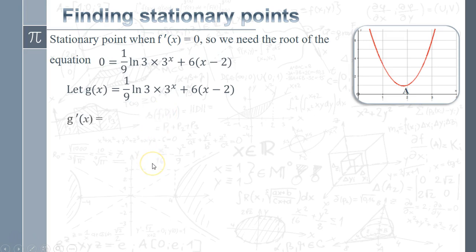To use Newton-Raphson, we're going to need g'(x), which means differentiating this function. Differentiate 3^x becomes ln(3)·3^x multiplied by all of this, which is a constant, then differentiate 6(x-2), which is just a constant 6. Tidying up, I've got ln(3)·ln(3), so I can write that as (1/9)·ln^2(3)·3^x plus 6. That's g'(x).